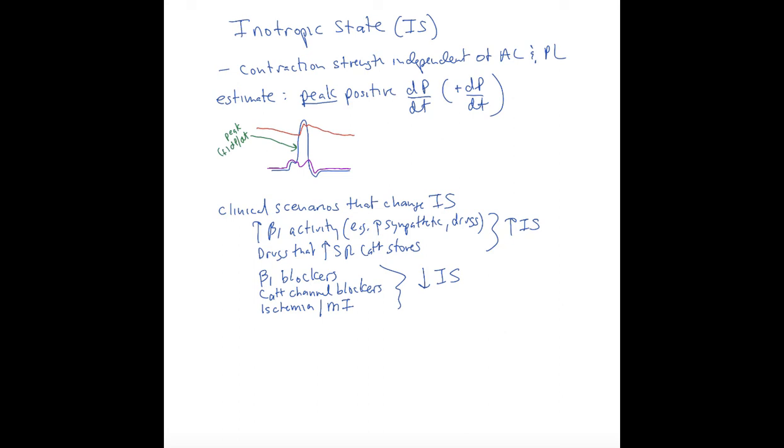The way we can estimate this would be looking at the peak positive dP/dT. That's happening during contraction - the rate of pressure developed is positive. We see in the Wigger's diagram that the ventricle pressure is rising during isovolumetric contraction and ejection, and then it falls. The maximum slope of this rise in pressure is right in the middle of isovolumetric contraction.